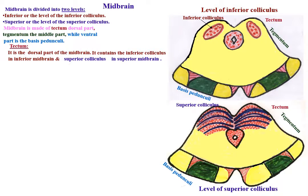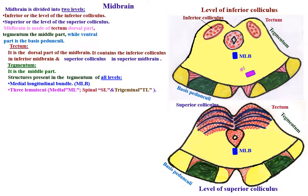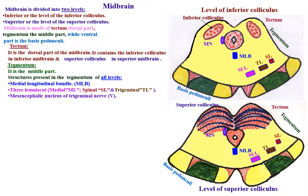Tegmentum, which is the middle part, contains the following structures present in all levels: medial longitudinal bundle; three lemnisci — medial lemniscus, spinal lemniscus, and trigeminal lemniscus; the mesencephalic nucleus of the trigeminal nerve, the fifth cranial nerve; then substantia nigra, formed of pigmented nerve cells having melanin; and finally, the reticular formation.